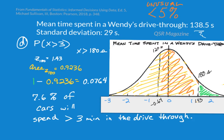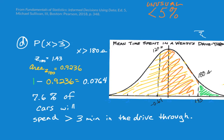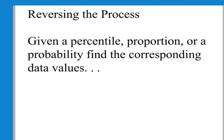So the examples we just did were all going from interest in a value of a variable, and moving from that to an area, which is a percentage or probability, the area under the curve. Let's talk about reversing the process. If you have the area under the curve, which is a percentile, a proportion, or a probability, find the corresponding data values.